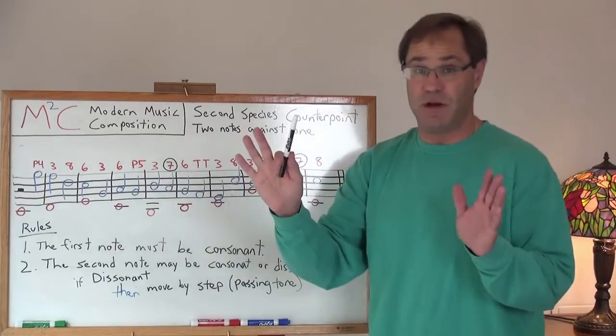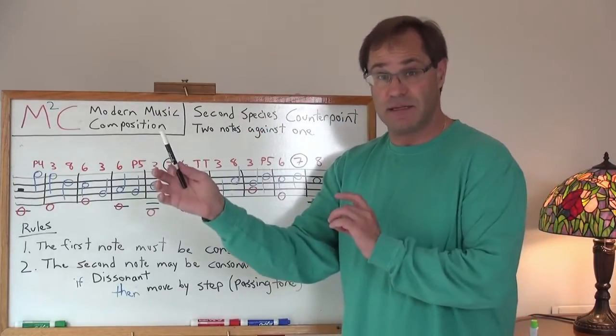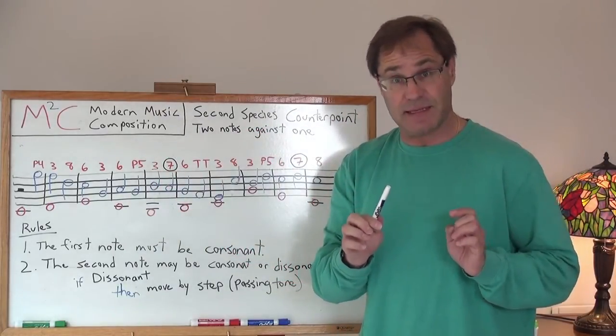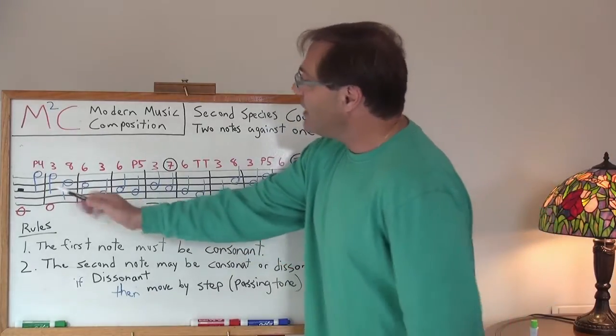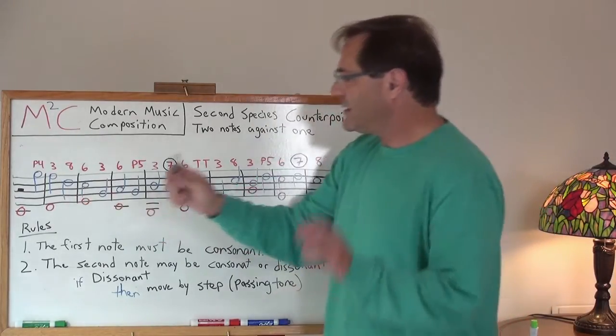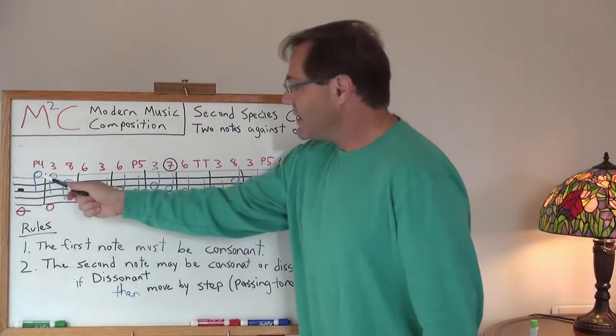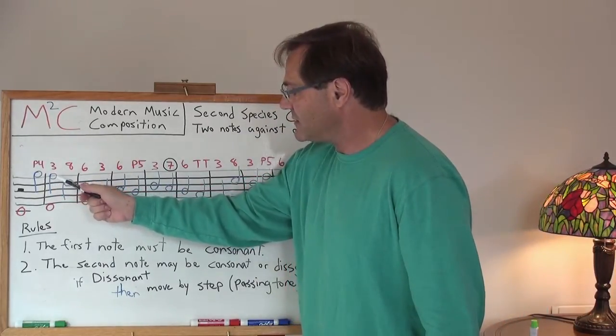And so, you know, a perfect fourth can sometimes be consonant and can sometimes be dissonant. Anyways, here it's kind of acting a little bit like a passing tone because I go from G down to F.